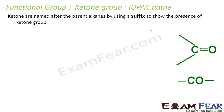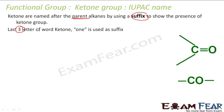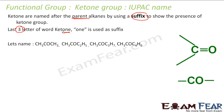Now let us do the naming convention — the IUPAC name. Here we use a suffix to show the presence of the ketone group by appending it to the parent alkane name. We use the suffix 'one' from the word ketone. For example, this molecule has three carbons — meth, eth, prop — so it will be propane, and with the suffix it becomes propanone.